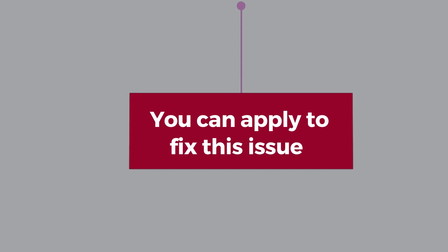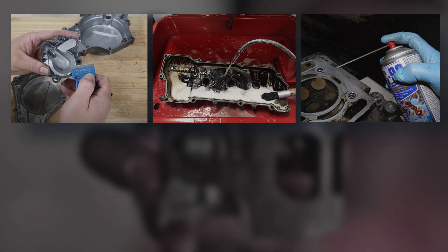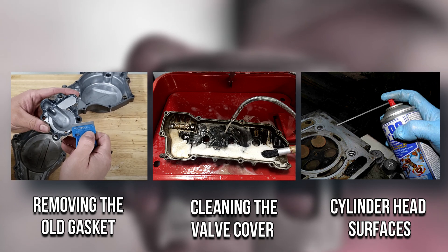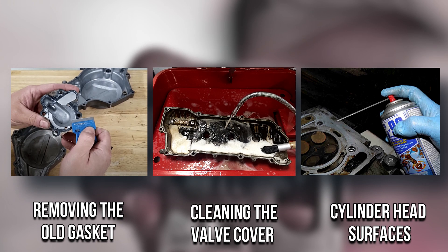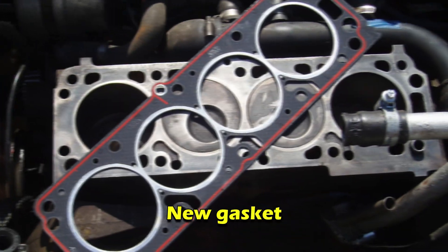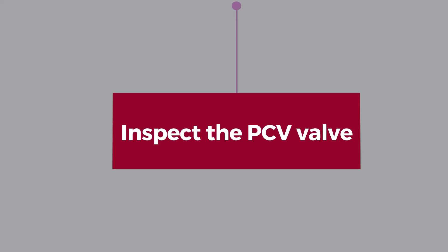Now let's look at the best solutions you can apply to fix this issue. Replace the valve cover gasket. This process is quite simple as it only involves removing the old gasket, cleaning the valve cover and cylinder head surfaces, and installing a new gasket. Inspect the PCV valve.